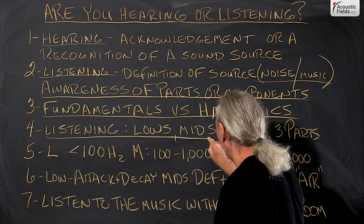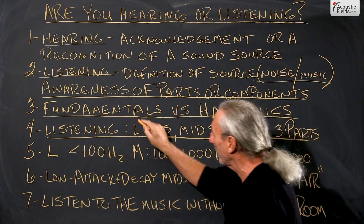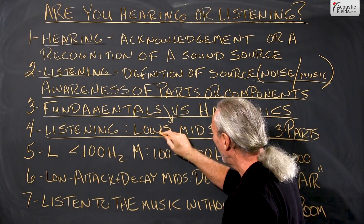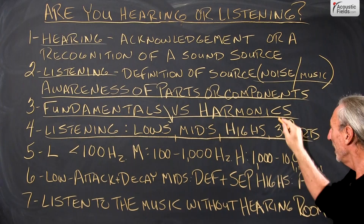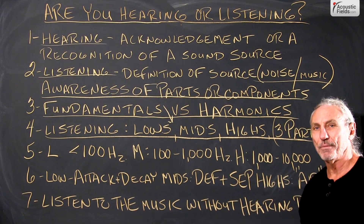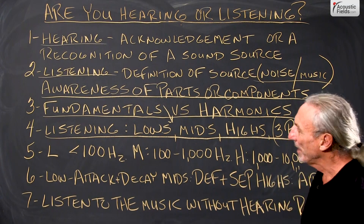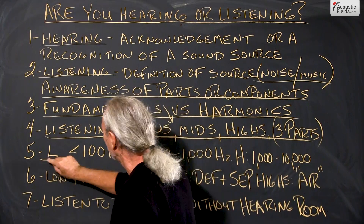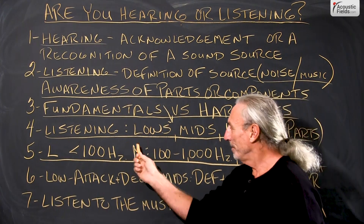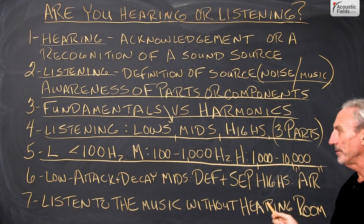So with listening, we're going to go one step further. We have our fundamentals and harmonics, then we're going to break the fundamentals up into lows, mids, and highs — three parts. A lot of graphs and charts have many different parts, but for purposes of illustration we'll just use three. Let's make it easy: lows below 100 Hz, mids from 100 to 1000 Hz, and highs from 1000 to 10,000 Hz.